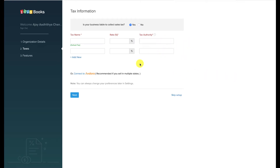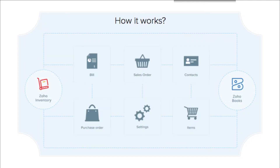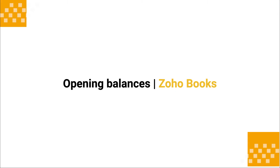Now Harsha will show you how to set up opening balances in Zoho Books. Thanks Ajay — as you said, all data in inventory is now available in Zoho Books. Henceforth, any new operation you perform in Zoho Books will be reflected in Zoho Inventory and vice versa. For example, if you create a sales order in Zoho Books it will be reflected in the sales order module of Zoho Inventory. Similarly, if you delete a sales order in Inventory it will be deleted in Zoho Books.